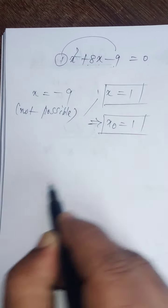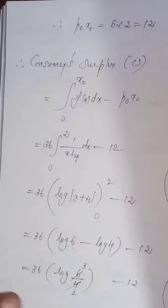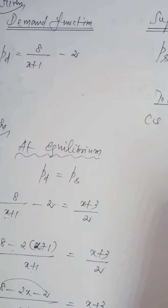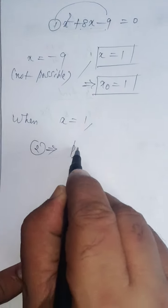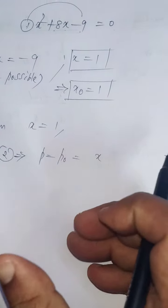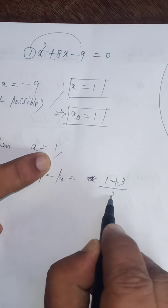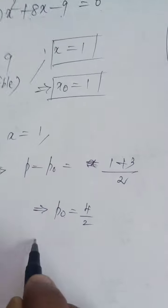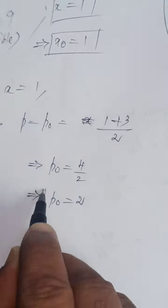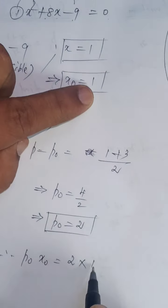So x₀ equals 1. When x equals 1, we have to find p. Consider equation number 2: PS equals (x plus 3) divided by 2. Equation 2 implies p₀ equals (x plus 3) by 2. Substituting x equals 1: p₀ equals (1 plus 3) by 2 equals 4 divided by 2, so p₀ equals 2. Therefore p₀ equals 2 and x₀ equals 1.